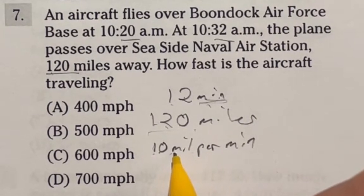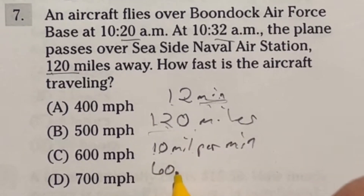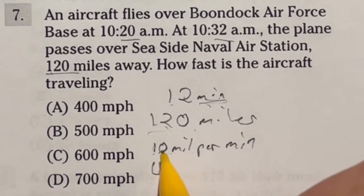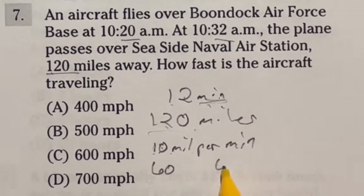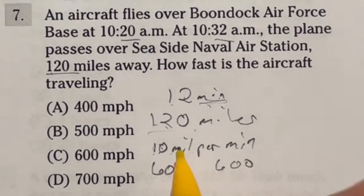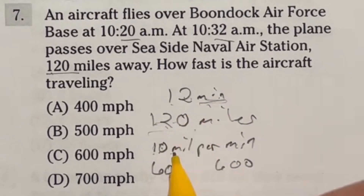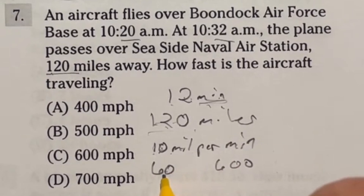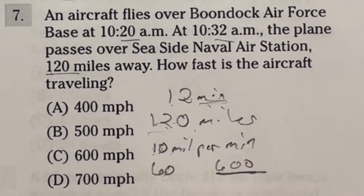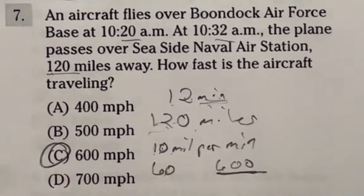Now, miles per hour requires converting minutes to hours. There are 60 minutes in an hour, so if you're going 10 miles per minute, just multiply 10 times 60 to get 600. So going 120 miles in 12 minutes means traveling 600 miles per hour. The answer is C.